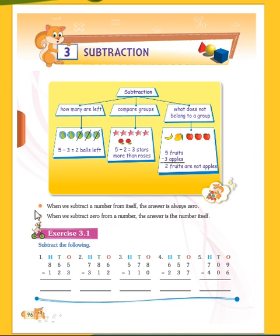When we subtract a number from itself, the answer is always zero. For example, if you have five chocolates and your mother says you have to give all five to your brother, you have no chocolates left. So if we subtract a number from itself, the answer is always zero.